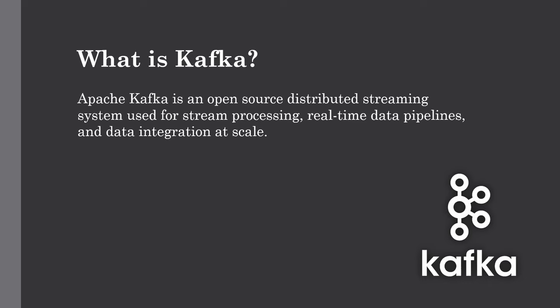Apache Kafka is a distributed streaming platform used for processing streams of data all in real-time, so that we can build real-time data pipelines as well as data processing and integration at very large scale. Without wasting any time, let's start installing Kafka — we just need to set up some configuration and we're good to go to ingest data using the producer and consumer from the command line.